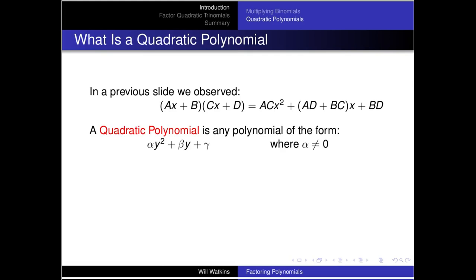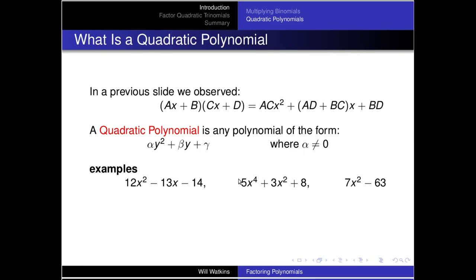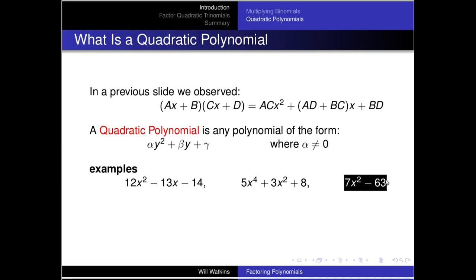We're looking at multiplying two binomials and we get a second-degree trinomial — that's what we mean by a quadratic polynomial. It's any polynomial of that form as long as the leading coefficient is not zero. There's the example we just produced. Notice that a quadratic can be somewhat hidden: for instance, if y = x², then y² = x⁴, so that one is still called a quadratic polynomial.